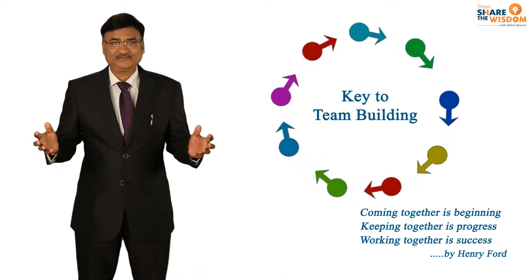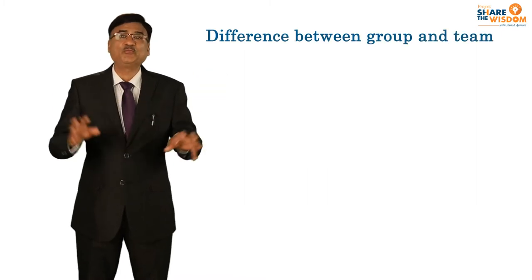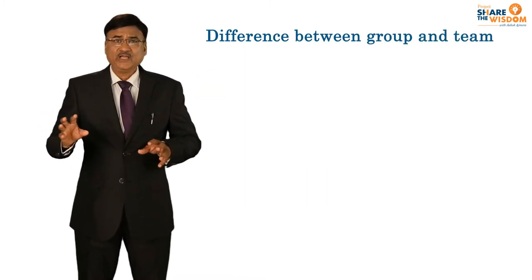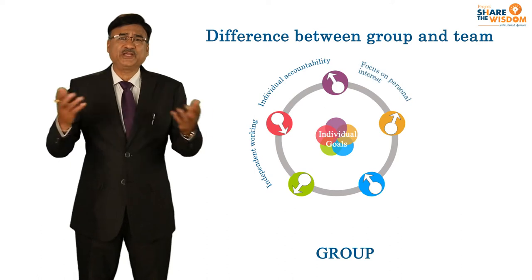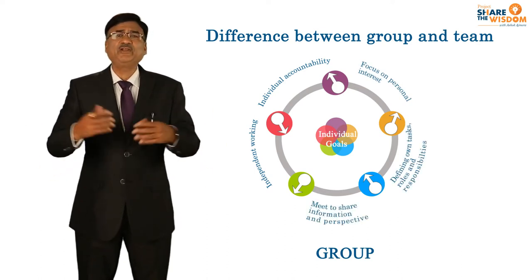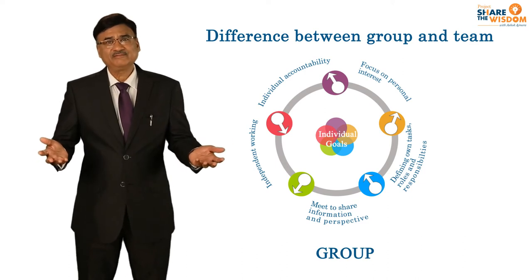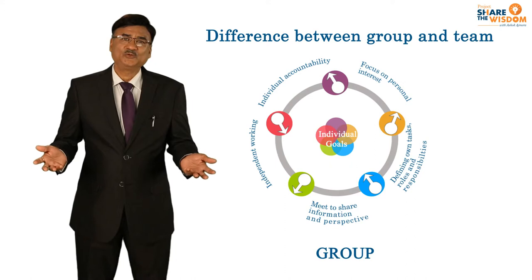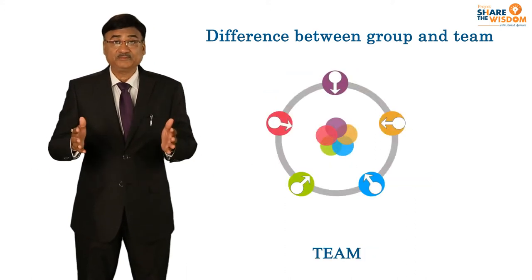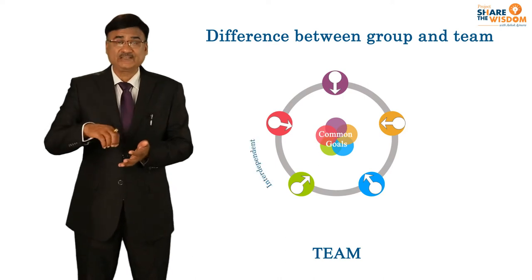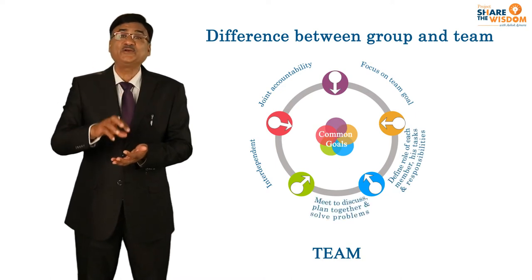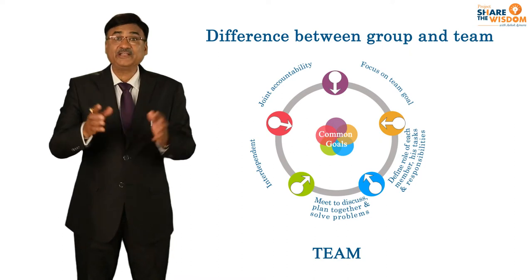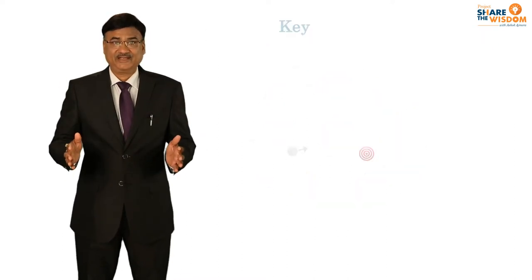For that we must understand first: what is the difference between a group and a team? A group is a gathering of people without any aims or objective, where everyone is doing whatever he likes, without knowing where to go or what to do. Whereas a team is a mix of individuals who have a common interest and common objective to achieve a goal in a disciplined, systematic manner.